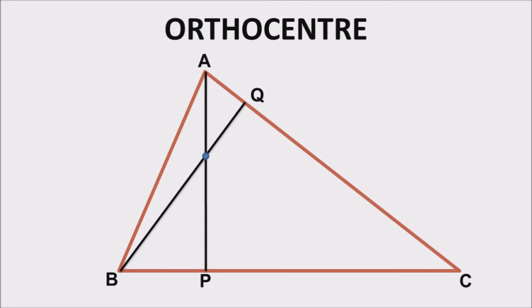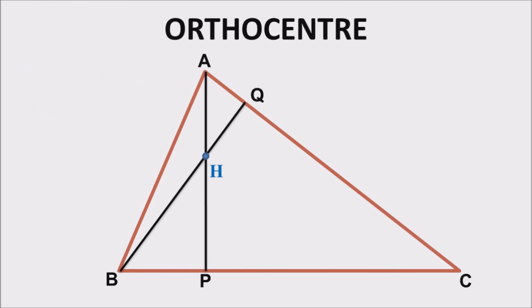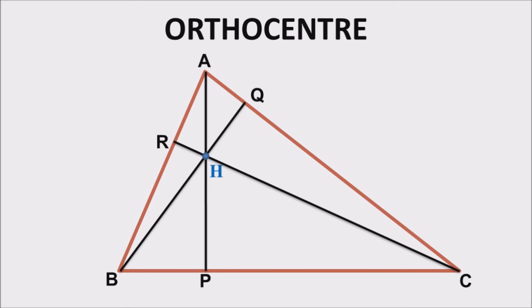The point of intersection of any two altitudes of a given triangle is known as the orthocenter. The symbol used for orthocenter is H. If we plot the third altitude, it will also pass through H, confirming that all altitudes are concurrent and their point of intersection is the orthocenter.